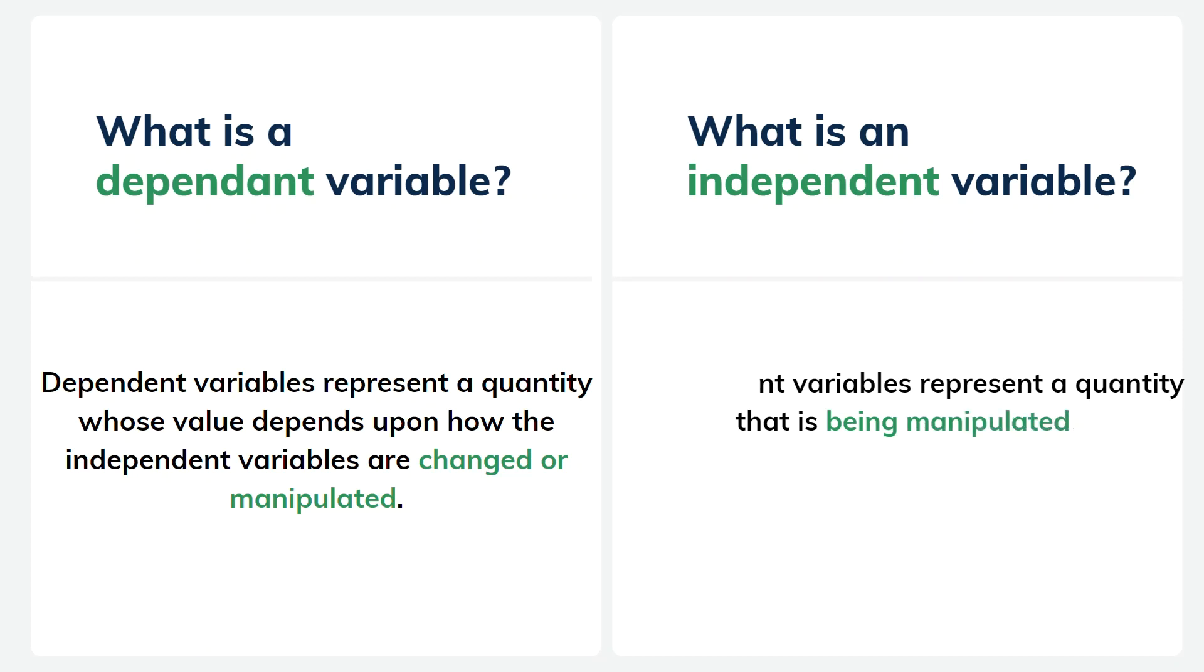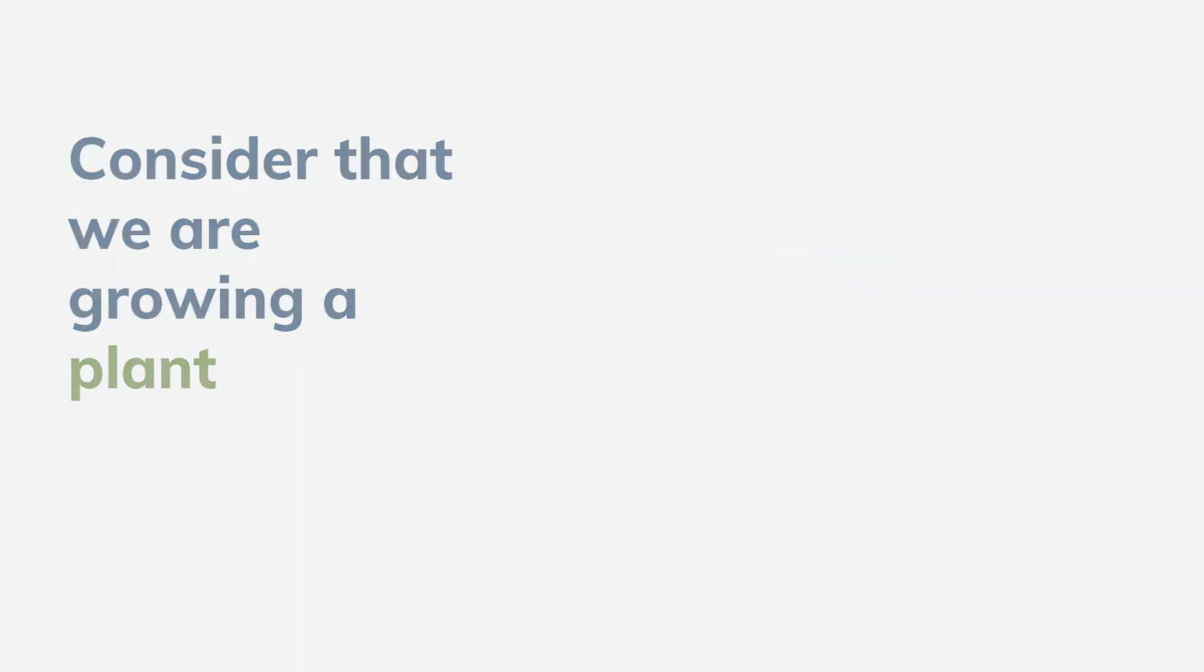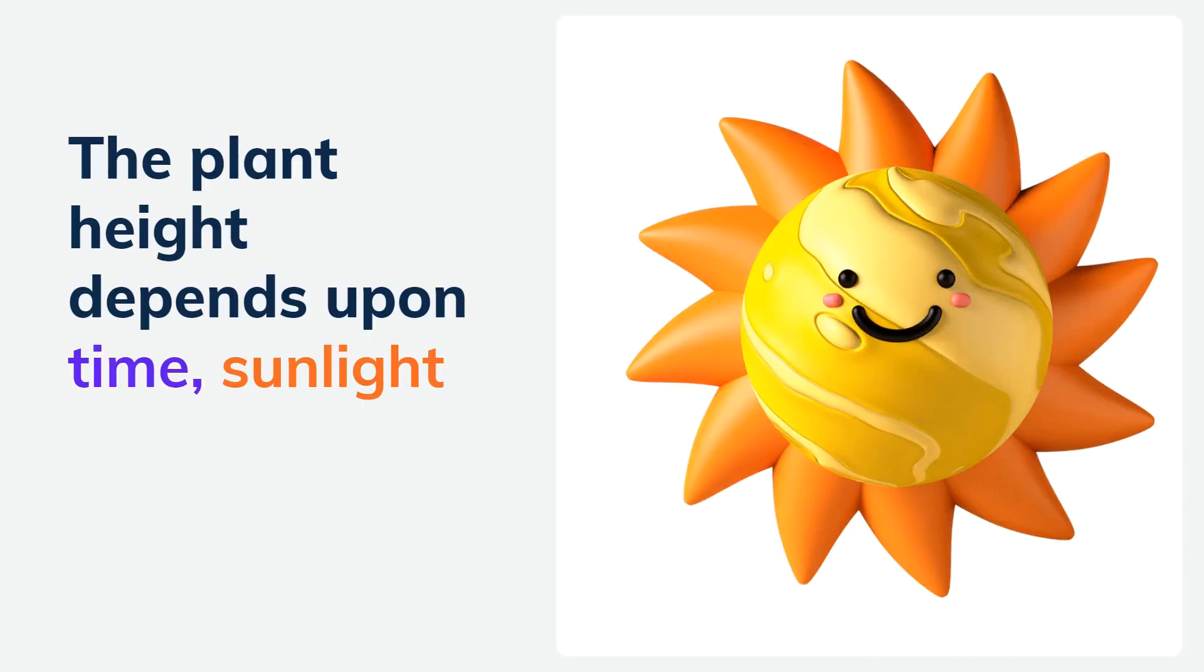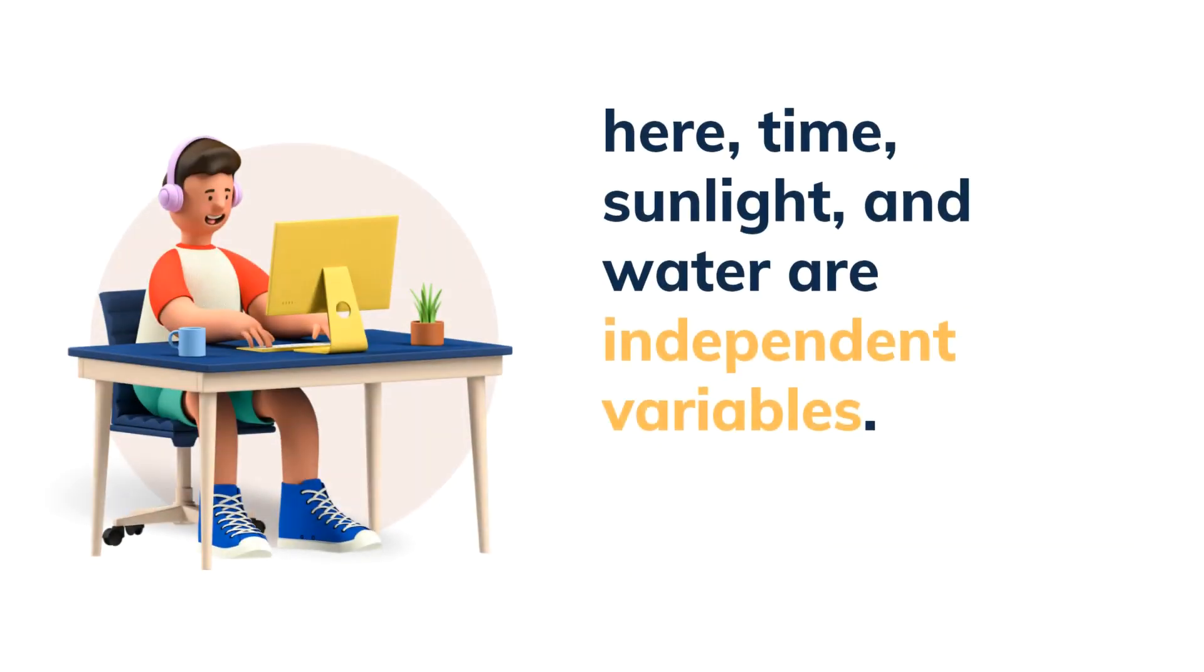Now consider an example of dependent and independent variables. Consider that we are growing a plant. Now the plant height depends upon the time it takes to grow, the sunlight, and water. Here the time, sunlight, and water are independent variables.